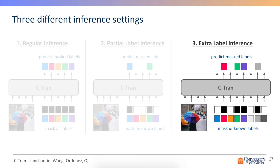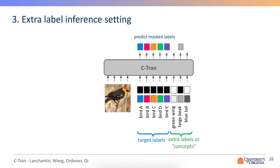The third inference setting is similar to the previous, where we have a set of potentially known extra labels. So these extra labels aren't ones that we necessarily want to predict, but we can use to help classify the target labels if they're available. So for example, if we're interested in predicting the bird species given an image of a bird, we may also have extra labels such as the wing color or the beak length.